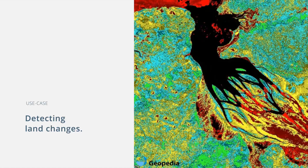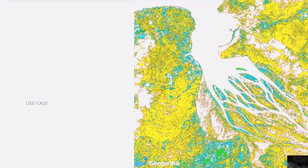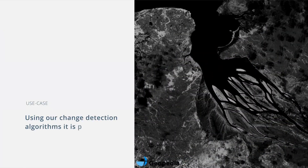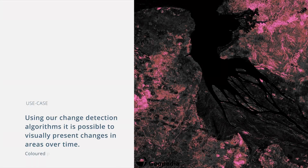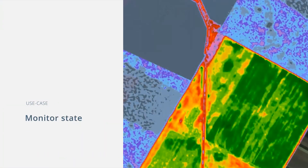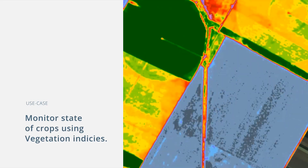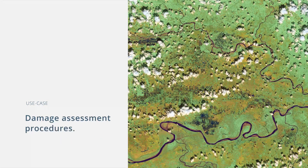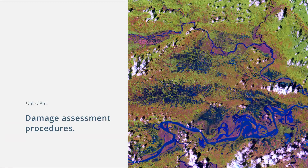Satellite image data is highly useful for creating or updating base maps and detecting major changes in urban land cover and land use. Remote sensing based land monitoring brings significant added value to agriculture, where farmers can observe the state of vegetation using vegetation indices. Furthermore, satellite imagery can give a wealth of information for assessment of damage and the evaluation of the situation on the ground in the aftermath of natural disasters.